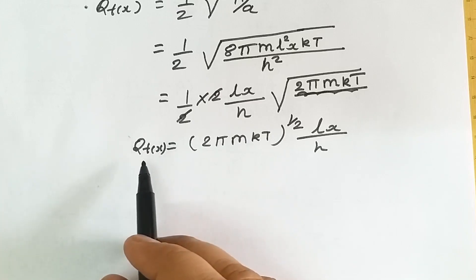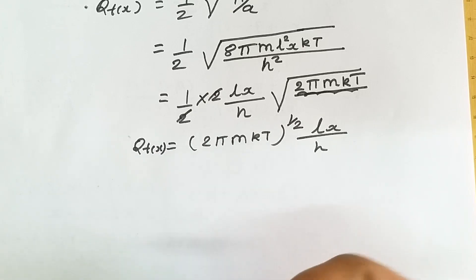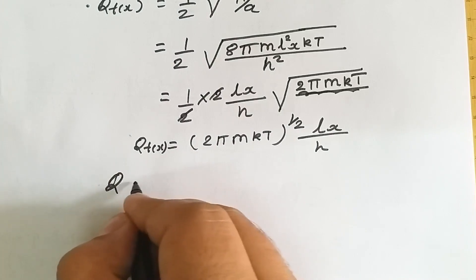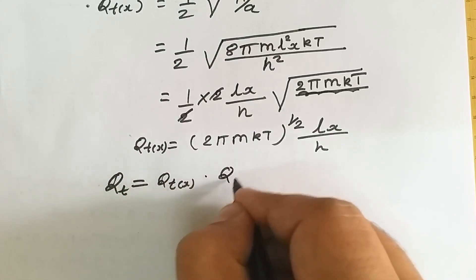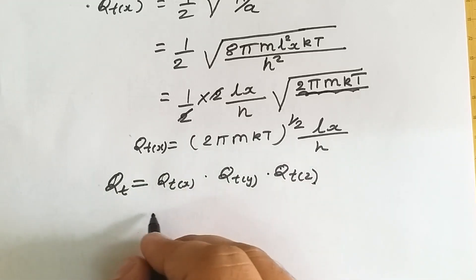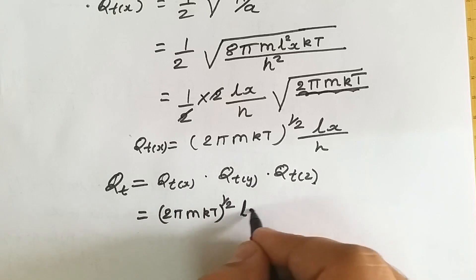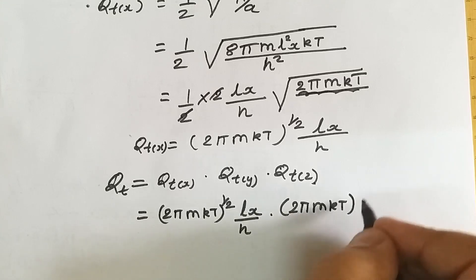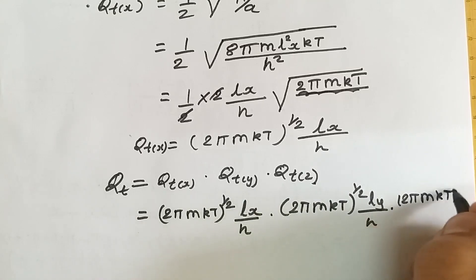This is the partition function along the x-axis. Since the particle can move in any direction — along y and z as well — the total translation partition function is the product of the partition functions along all three axes: qt equals (2 pi m kT)^(1/2) L_x/h times (2 pi m kT)^(1/2) L_y/h times (2 pi m kT)^(1/2) L_z/h.